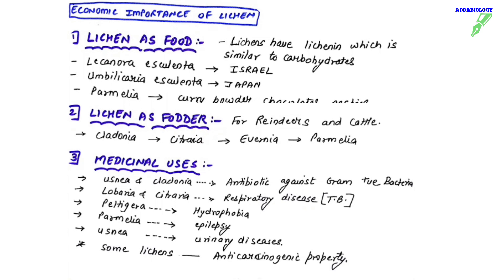For medicinal use, lichens such as Usnea and Cladonia are used as antibiotics against gram-positive bacteria. Lobaria and Cetraria act on respiratory disorders like TB. Peltigera is used in cases of hydrophobia — fear of water. Parmelia is used to treat epilepsy. Usnea is used to treat all urinary disorders. Some lichens are also found to be anti-carcinogenic, helping to prevent cancer.